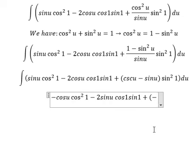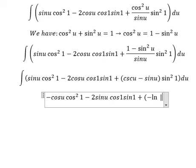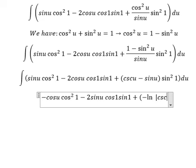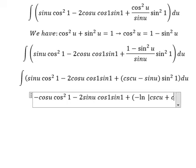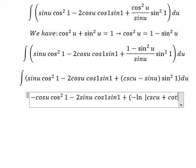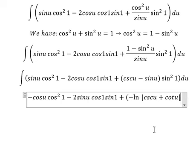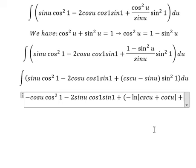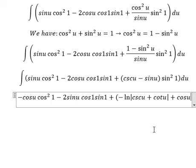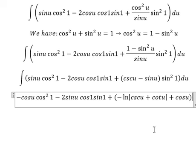The integration of cosecant(u) is negative ln of the absolute value of cosecant(u) plus cosine(u). The next term gives cosine(u), and this one is sine(1) to the power of two.